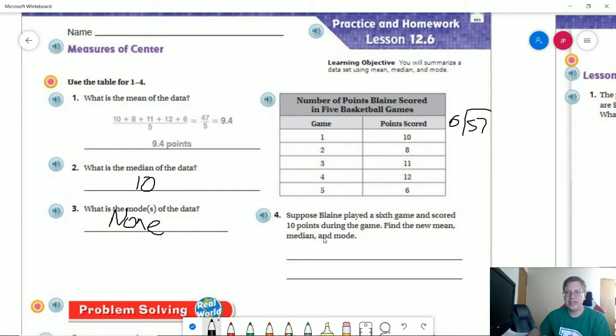And then if we play a 6 game and this person scores 10 points, then we need to find the new mean, the new median, and the mode. So our mode would become 10. Our median is still going to be 10 because now I have two of those.